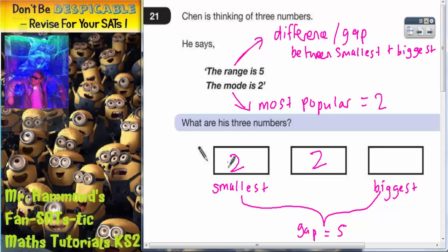So if the smallest number is two and the gap needs to be five, if you add the gap back onto two, two add five would take it to seven. So the biggest number would have to be seven.